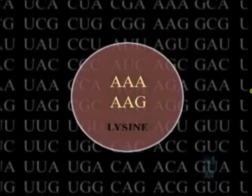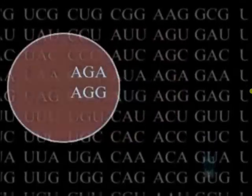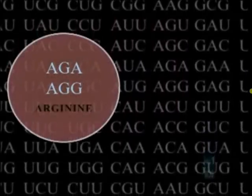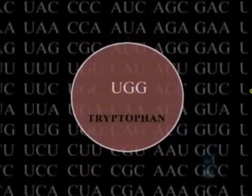AAA or AAG means the amino acid lysine. AGA or AGG are codons for arginine. Leucine has six alternative codons for it. Tryptophan has but one. It's a universal genetic code used by all life, past and present.